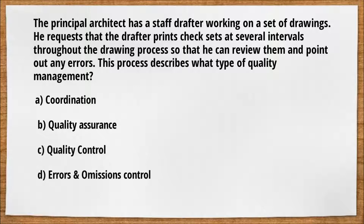This process describes what type of quality management: a) coordination, b) quality assurance, c) quality control, or d) errors and omissions control? The answer to this question is b) quality assurance.